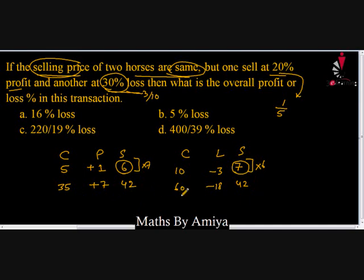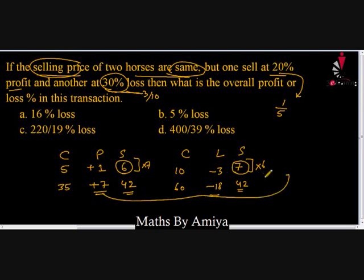The complete transaction shows selling price = 42 for both. Now checking overall profit or loss: profit is +7, loss is -18, so net result is -11 — we are at a net loss of 11.